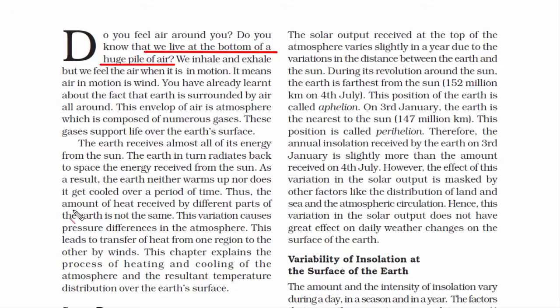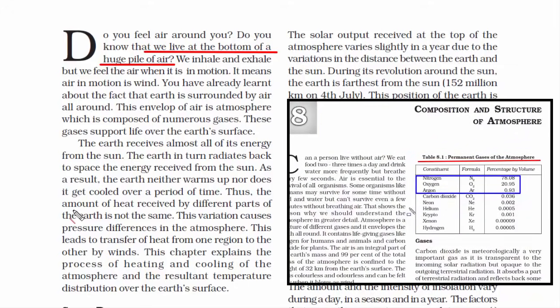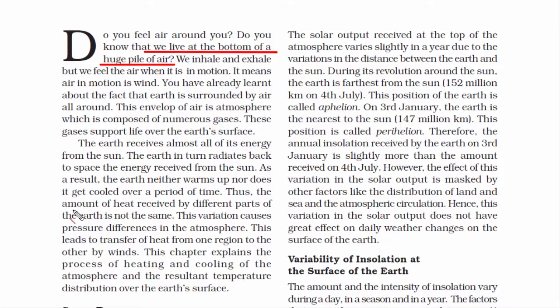In the previous chapter, that is chapter 8, structure and composition of atmosphere, we came across the list of gases that exist in atmosphere. Here's the list of gases, and the top 3 are nitrogen, oxygen and argon. Coming to the present chapter,